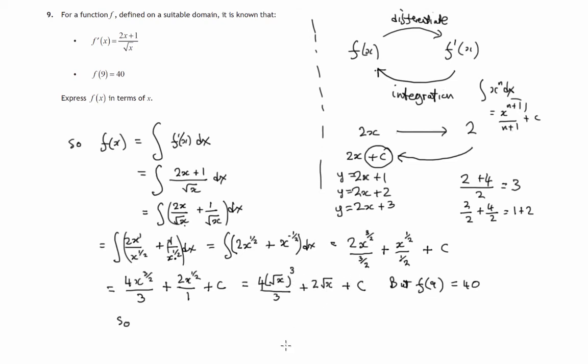So 4 times the square root of 9 cubed over 3 plus 2 times the square root of 9 plus the constant will give us 40. Now the square root of 9 is 3, so we've got 4 times 3 cubed over 3 plus 2 times 3 plus c is equal to 40.